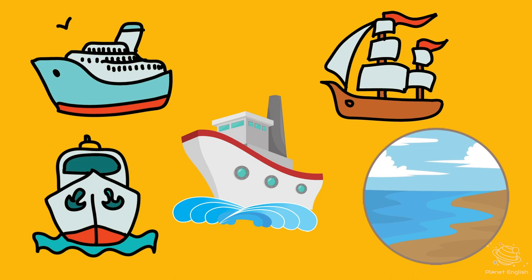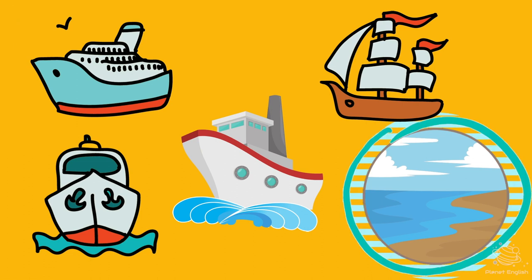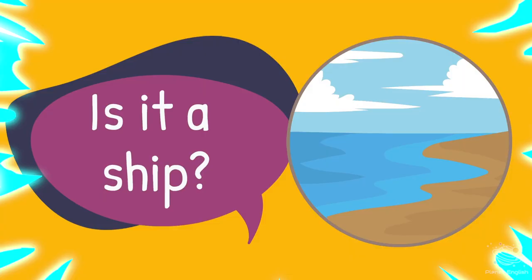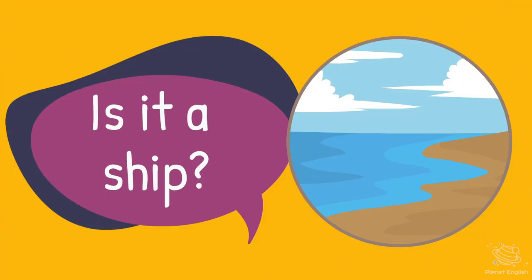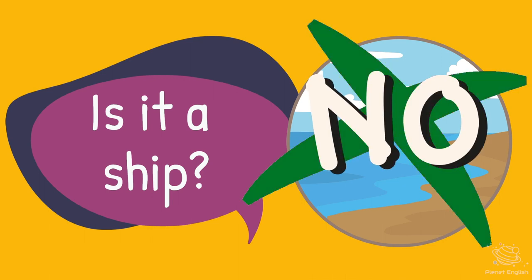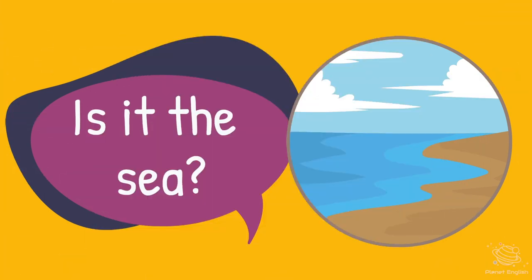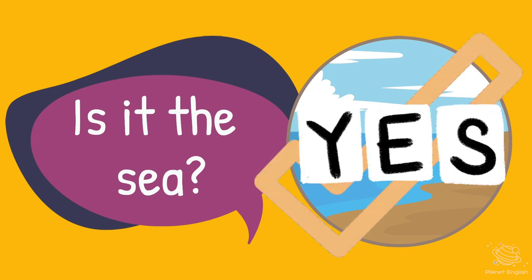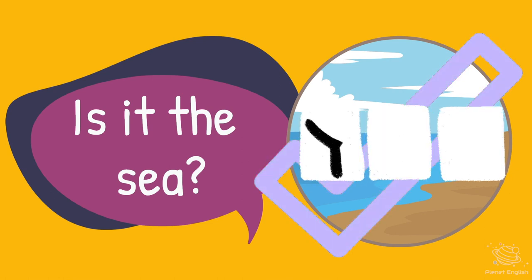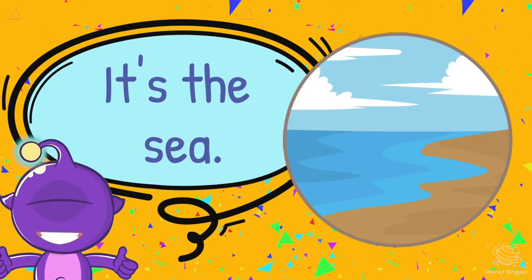Where is the odd one out? 5, 4, 3, 2, 1. Is it a ship? No. Is it a ship? No — it's the sea.